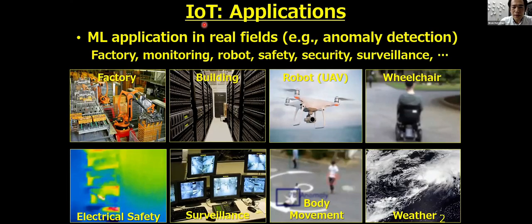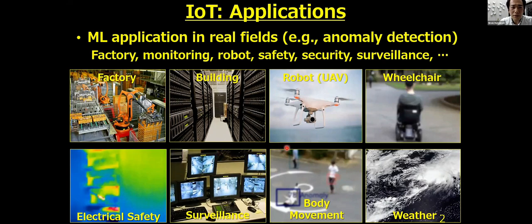IoT devices are used in various places such as a factory, building, UAVs, personal mobility, home electronics, surveillance, healthcare, and weather forecasting. We are working on anomaly detection in these real environments.